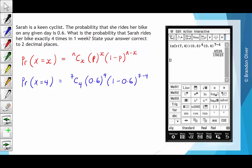When we hit execute, we find that the probability is 0.29. Therefore, the probability of Sarah riding her bike exactly 4 times in 1 week is 0.29, correct to 2 decimal places.